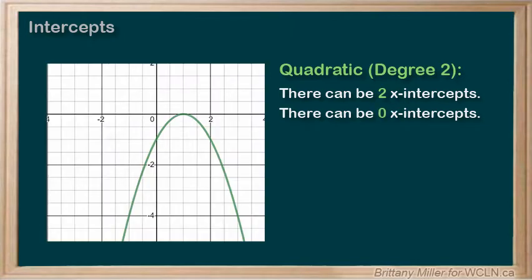We can even have a quadratic with a single x-intercept if it's just touching the x-axis with its vertex. The vertex of a quadratic is the maximum or minimum point, the top or bottom of the u.